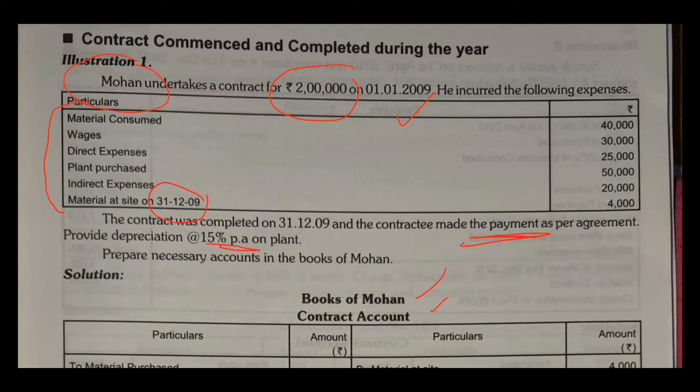First of all, we will write 'In the Books of Mohan' — this is very necessary to write. Then you will write the contract account. Now some contractors have many contracts, so we write the number — like Contract Account No. 101, 102, 103. If a number is given in the question, you have to mention it. Now for the contract account, we will make a debit side and credit side. Let's record how our items are recorded.